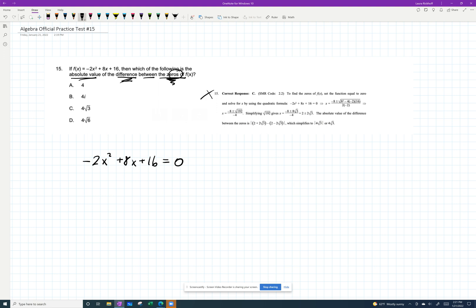I'm going to ignore their answer key for a second. If I were just looking at this, I would factor out a negative 2: x squared minus 4x minus 8 equals 0. And then I would attempt to factor because factoring is fastest. Multiply to negative 8, add to negative 4. But that doesn't work, so it doesn't factor. But that's okay.